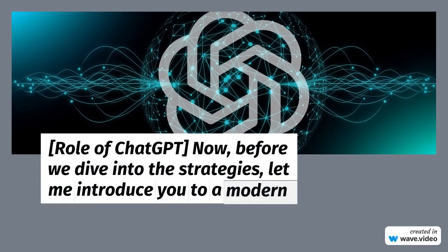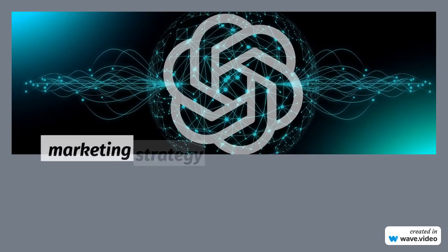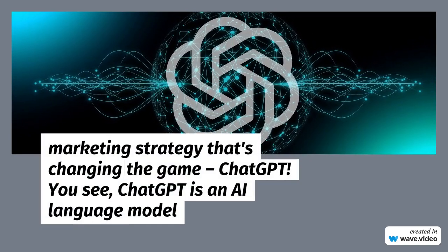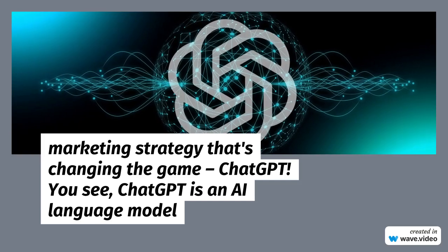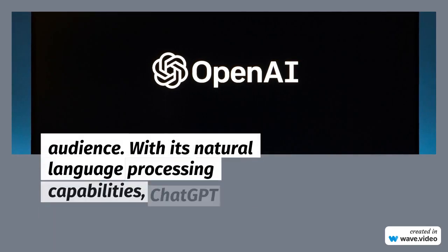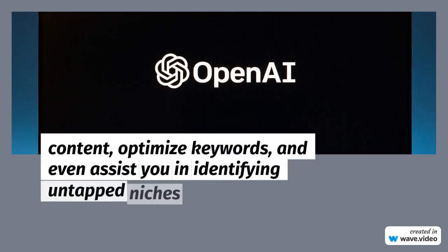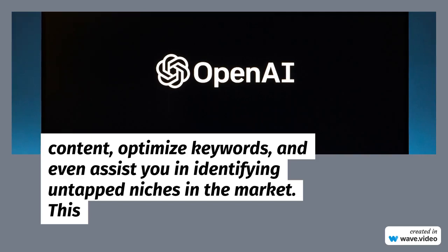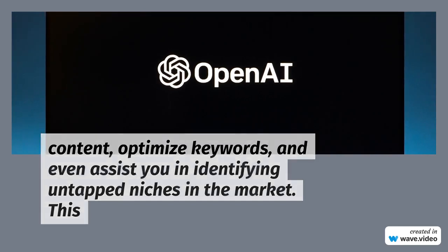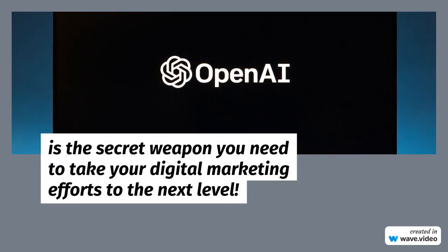Role of ChatGPT. Before we dive into the strategies, let me introduce you to a modern marketing strategy that's changing the game — ChatGPT. ChatGPT is an AI language model developed by OpenAI, and it's revolutionizing the way marketers connect with their audience. With its natural language processing capabilities, ChatGPT can help you craft engaging content, optimize keywords, and even assist you in identifying untapped niches in the market. This is the secret weapon you need to take your digital marketing efforts to the next level.